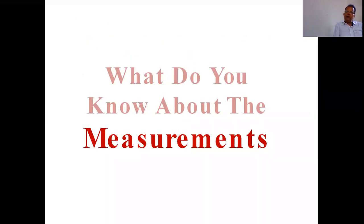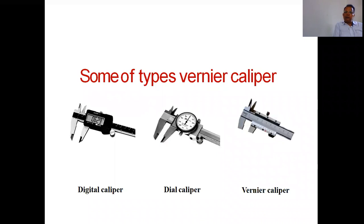What do you know about the measurements? Measurements are three types. One type is simple Vernier Caliper. Second type is Dial Vernier Caliper. And third is a Digital Vernier Caliper.